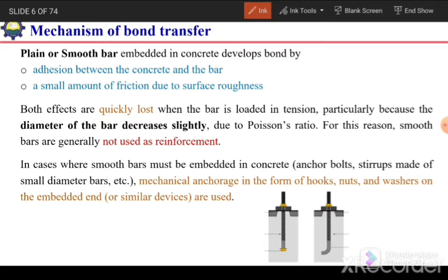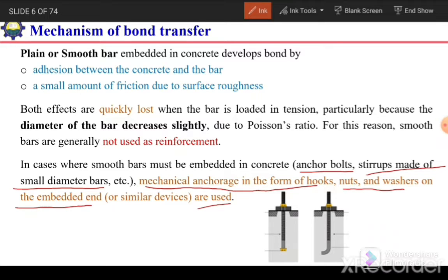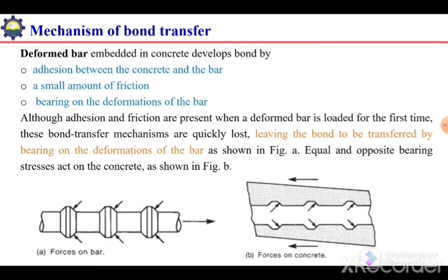In cases where a smooth bar must be embedded in concrete — for example, anchor bolts or stirrups made of smaller diameter bars — mechanical anchors in the form of hooks, nuts, arms, and washers on the embedded end are used. So if it is necessary to use a smooth bar, we provide hooks at the end or bolts at the end. In the case of stirrups, we use hooks — 135-degree hooks — at the end.